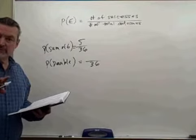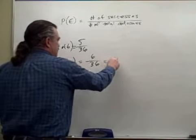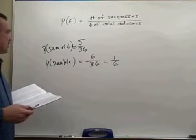Double one, double two, double three, double four, double five, double six. That's six outcomes out of 36, or one-sixth. So that's interesting.